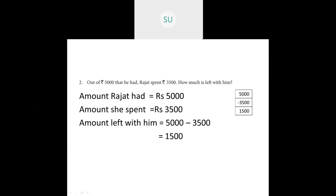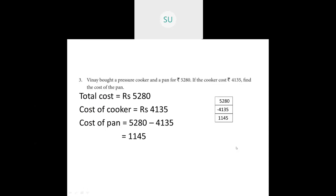Problem 2: Rajat had 5000 rupees and spent 3500 rupees. How much is left? Amount left is 5000 minus 3500. 0 minus 0 is 0; 0 minus 0 is 0; 0 minus 5 — borrow from 5, giving 10 minus 5 is 5, thousands becomes 4; 4 minus 3 is 1 — so the answer is 1500. Rajat is left with 1500 rupees.